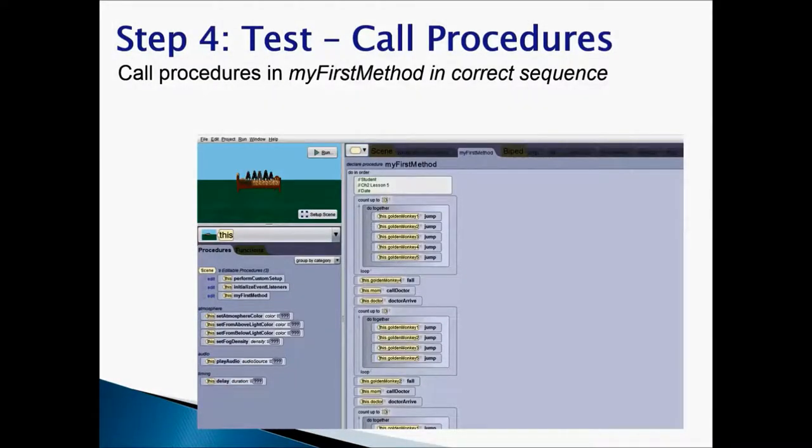Step 4 Test. When we test, we need to call our procedures in my first method in the correct sequence. Keep in mind, you will be calling these procedures many number of times. So instead of calling it all the time, we can just call it once for 5 monkeys, make the story for 5 monkeys and then just copy and paste that over and over again.